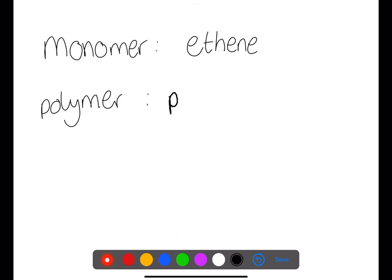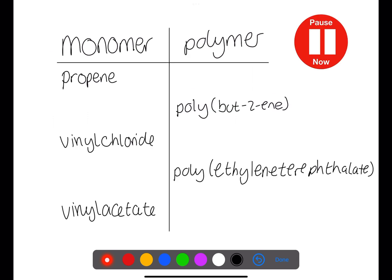To name a polymer, you simply take the monomer's name and put the prefix poly in front of it. You may also see this written with brackets around the monomer's name. Pause the video now and complete this table.